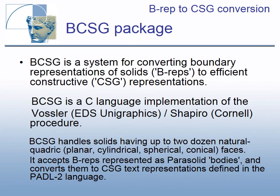BCSG is a software system for converting boundary representations of solids to efficient constructive CSG representations. It is a C-language implementation of the algorithm by Rossignac and Shapiro. BCSG handles solids with up to 24 natural quadric faces — planar, cylindrical, spherical, and conical. The software accepts BREP models represented as parasolid bodies and converts them to CSG text representations defined in the PADL2 language.